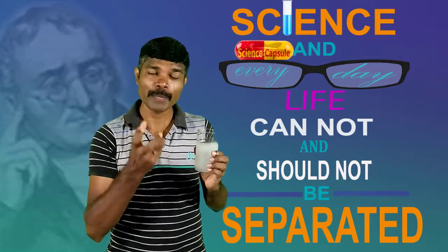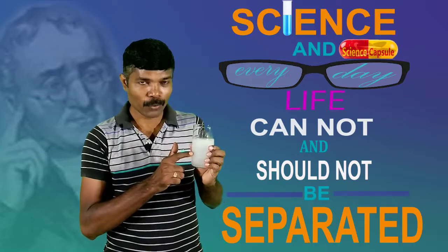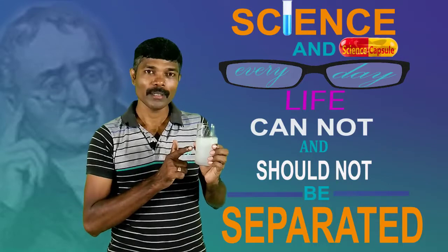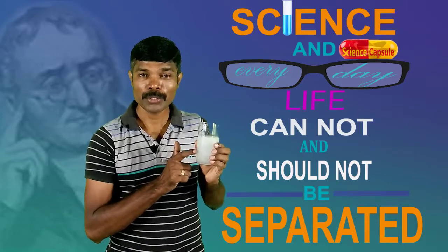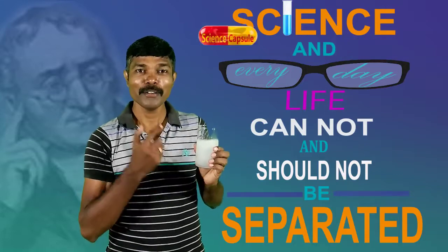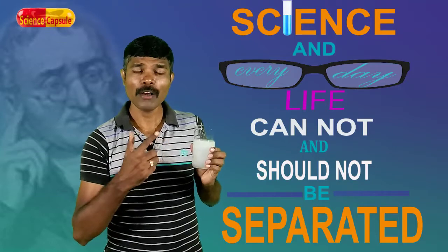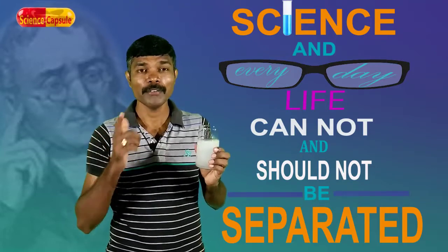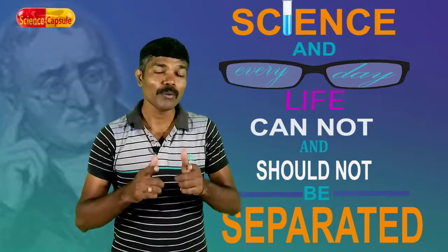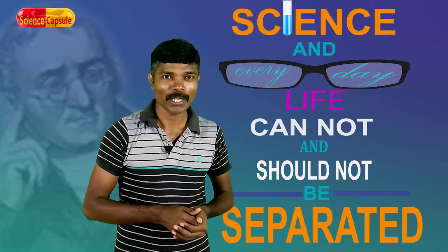Here in this case, all the colors get reflected back. That is why the color of the solution becomes white. If any object absorbs all the light, then we see that object as black in color. If any object reflects all the colors, then we see that object as white in color. Hope you understood why Dettol turns white in color when it is mixed with water.